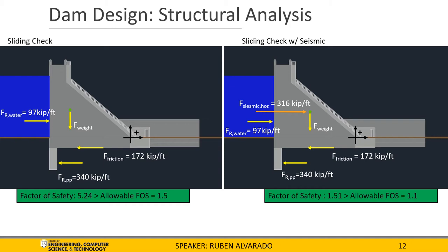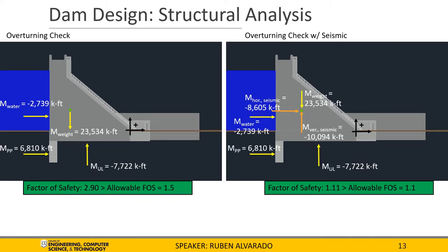In this part of the analysis, we check what forces cause rotation about the origin. The resulting water and uplift forces cause a combined overturning moment of negative 10,461 kips per foot clockwise. The weight and resultant passive pressure forces produce a resisting moment of 30,344 kips per foot counterclockwise, producing a 2.9 factor of safety. Analyzing the structure with seismic activity, the horizontal and vertical seismic forces produce an additional negative 18,699 kips per foot, for a total overturning moment of negative 29,169 kips per foot. However, the resisting moment of 30,344 kips per foot still produces a 1.11 factor of safety. Both cases satisfy the allowable factor of safety.